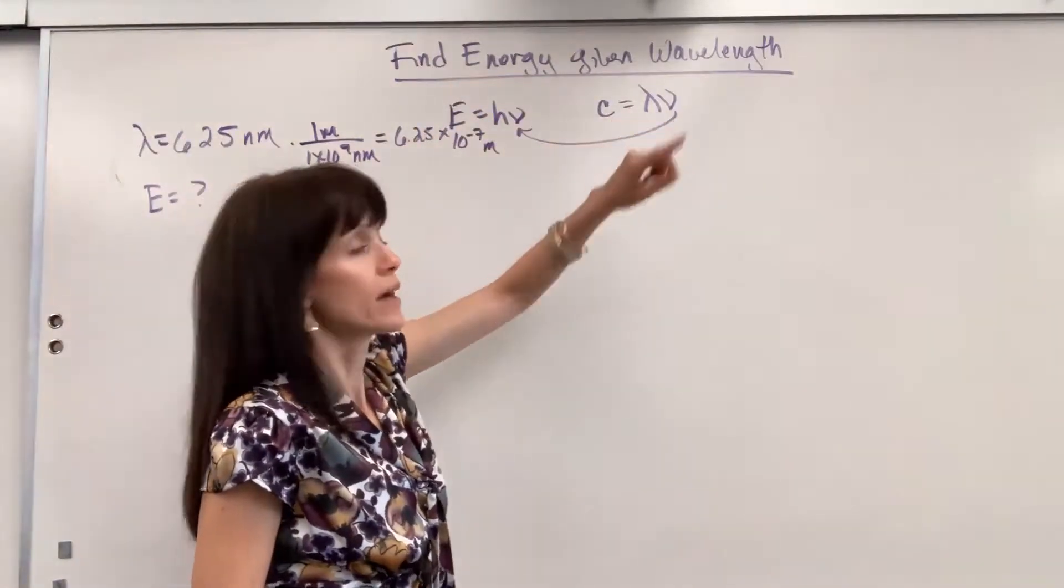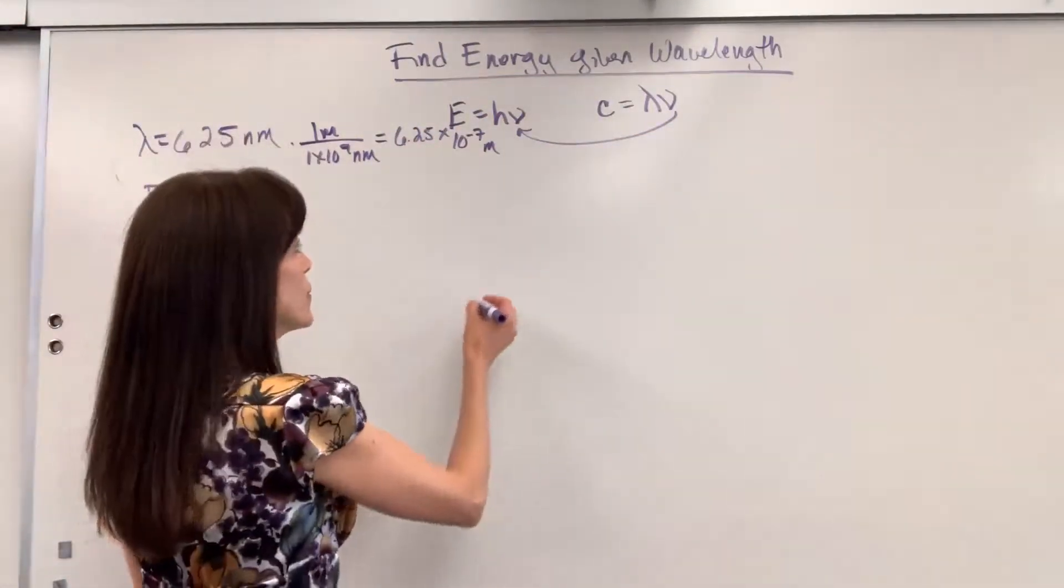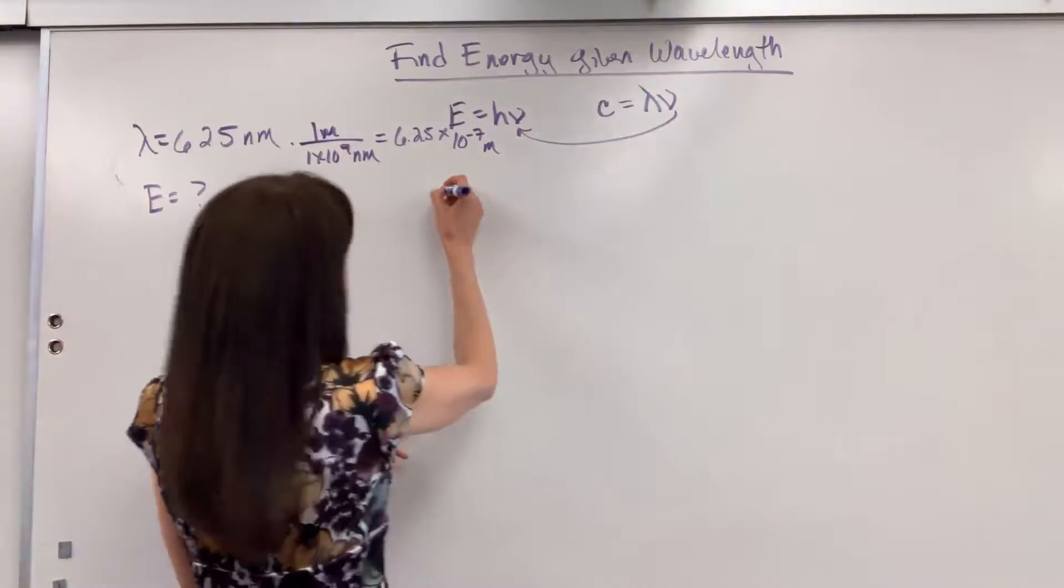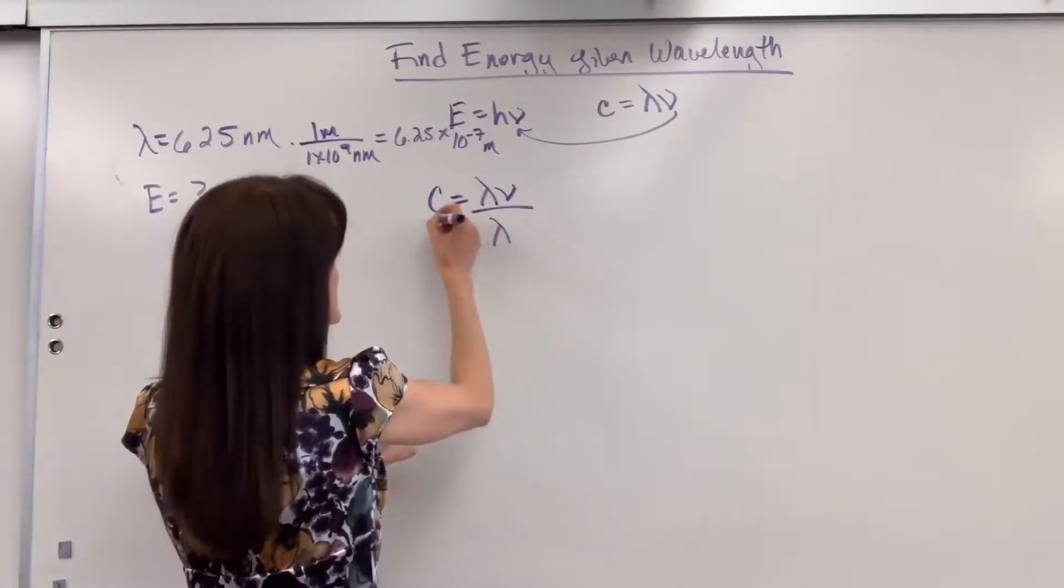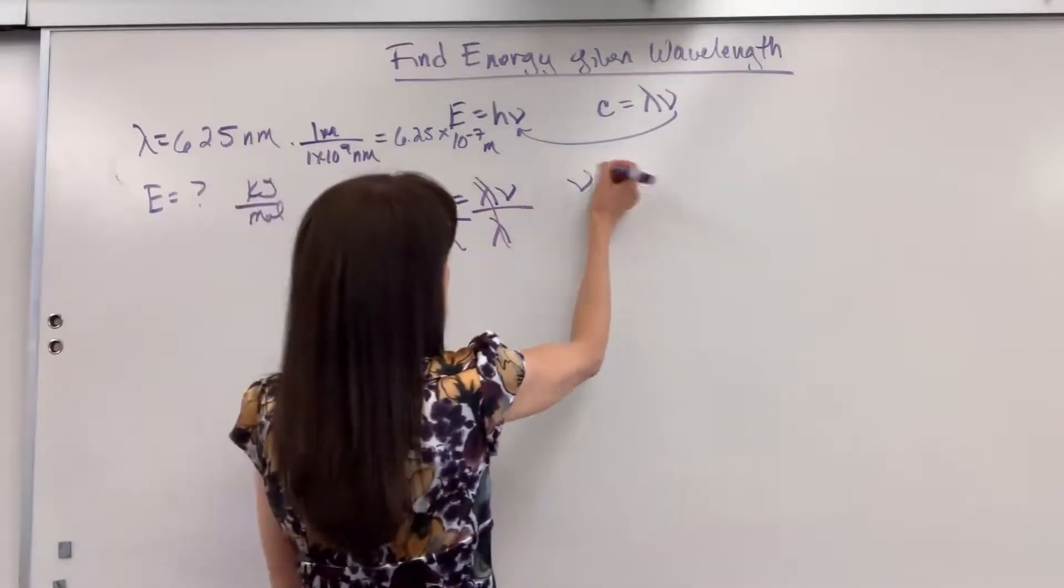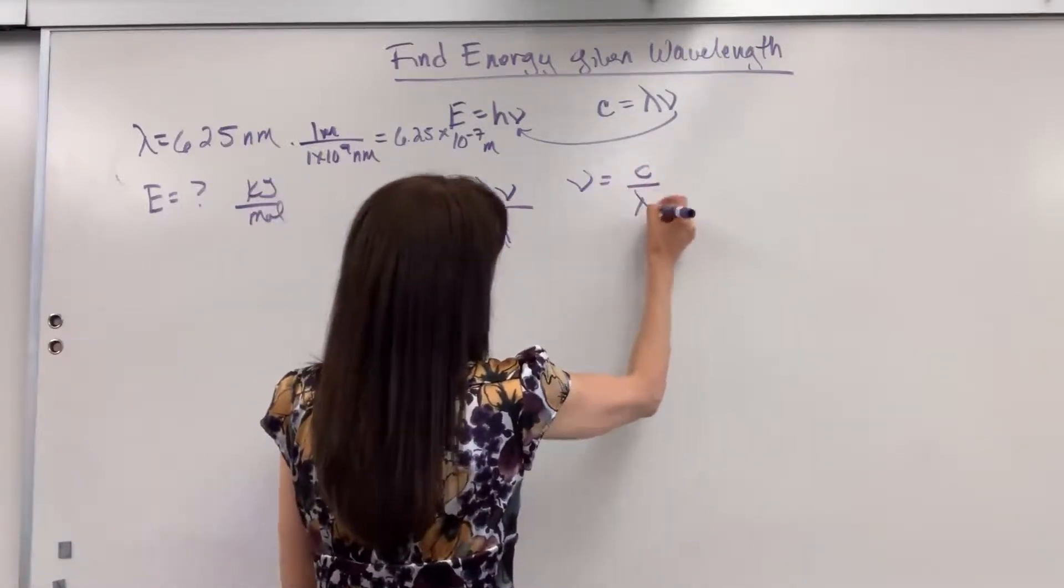I want to solve for my unknown. That's going to be nu. So let's divide both sides by lambda to get nu by itself. So we get nu equals speed of light divided by lambda.